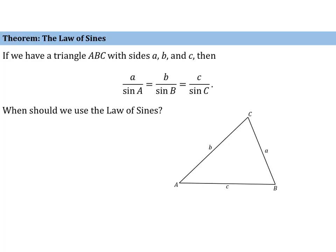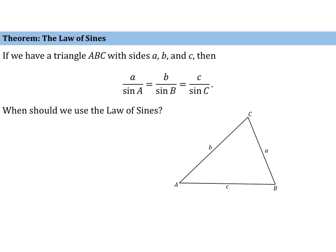Suppose that we have a triangle ABC with sides a, b, and c. We'll use capital letters to denote the angles, and we will use the lowercase letters to denote the sides, and these occur in pairs. Side a is opposite angle A, side b is opposite angle B, and side c is opposite angle C. If we have such a triangle, then we have this set of equations that is true.